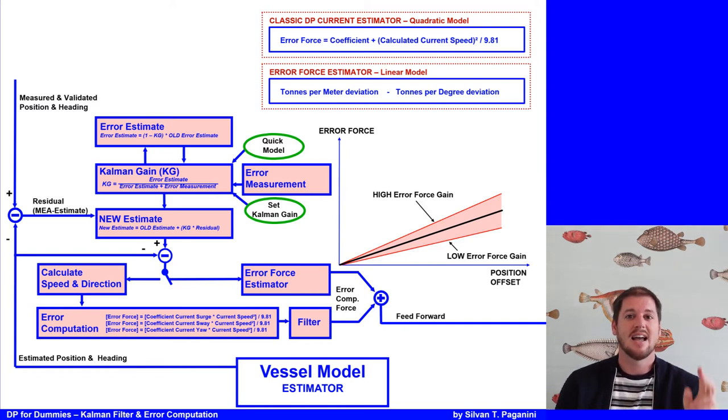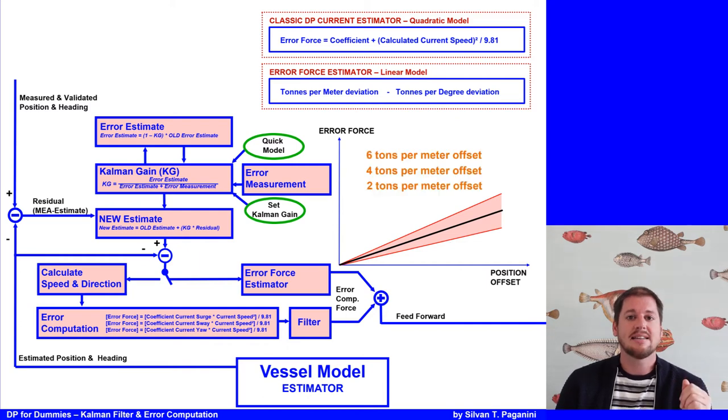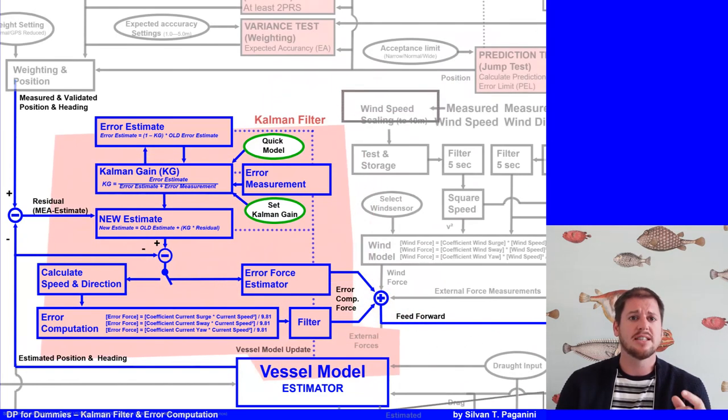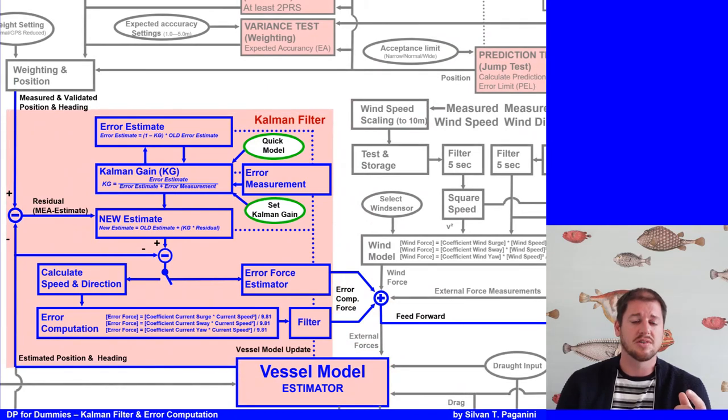Let's say, like in our example, the error force gain is 4 tons per meter offset. If the error force gain is high, it would be 6 tons per meter offset. If it's low, 2 tons. So the operator can adjust the error force gain in this range, as an example. Like I said before, most methods, the DPO cannot change the Kalman gain, and if so, then only if it's during a DP special operational mode where rapidly changing not measured forces are present.